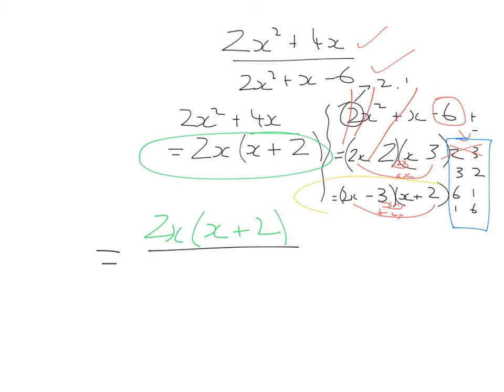And this answer here was for the bottom, and that's 2x minus 3 by x plus 2. And thankfully, we notice something is happening. We have an x plus 2 on the top and an x plus 2 on the bottom. They are going to divide into each other and give us 1. So therefore, the answer to this is 2x over 2x minus 3.